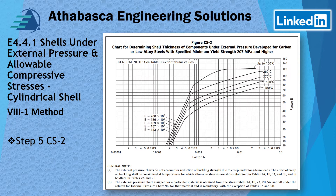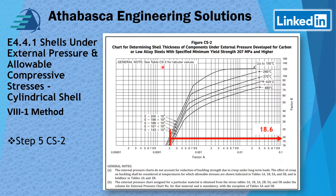We've determined we need to use the CS-2 curve. We draw a line using our Factor A value, go across to the right, and interpolate to get Factor B = 18.6 MPa in metric units. Note that tabulated versions of these curves are available, which can be useful for programming in Excel or a similar tool, though they could still be improved.